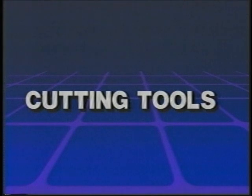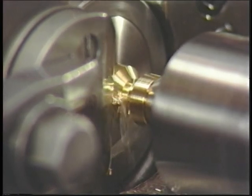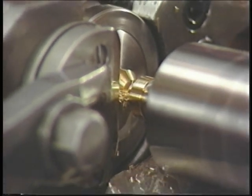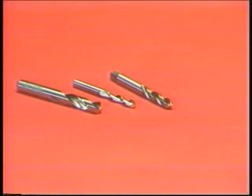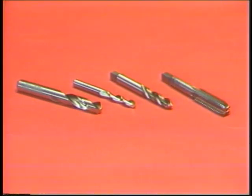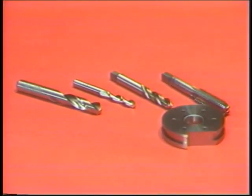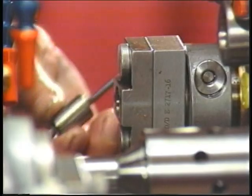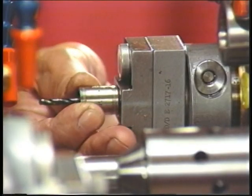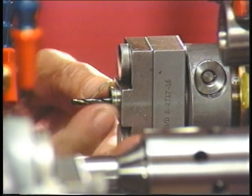Cutting tools. Cutting tools remove material from the stock in various ways and have different functions. Examples of cutting tools are drills, taps, form tools, cutoff tools, etc. The replacement or resharpening of these tools is called tooling.